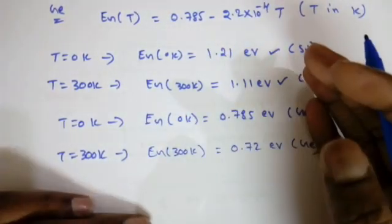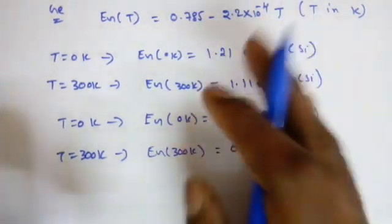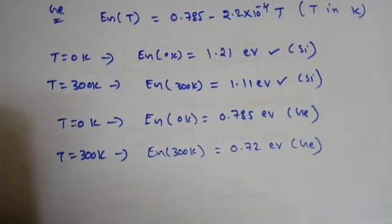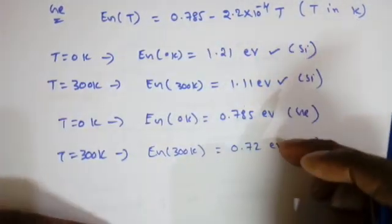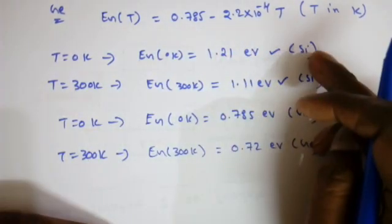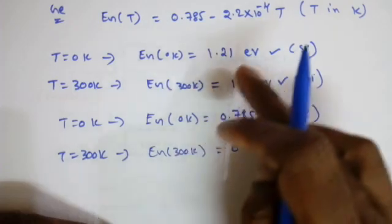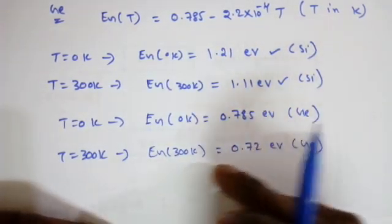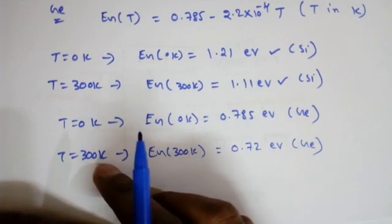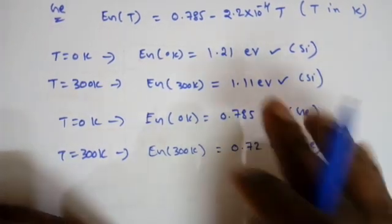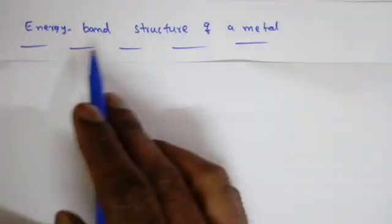To summarize the key values: for silicon, E_g = 1.21 eV at 0 K and 1.11 eV at 300 K; for germanium, E_g = 0.785 eV at 0 K and 0.72 eV at 300 K. These values need to be remembered for solving numerical problems.